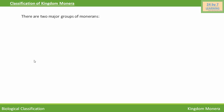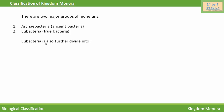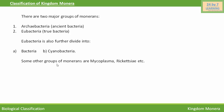Kingdom Monera consists of Archibacteria and Eubacteria. Archibacteria is a group of ancient, primitive-type bacteria. Eubacteria is a group of true bacteria, further subdivided into bacteria and cyanobacteria. Some other groups of Monera are Mycoplasma, Rickettsia, etc.